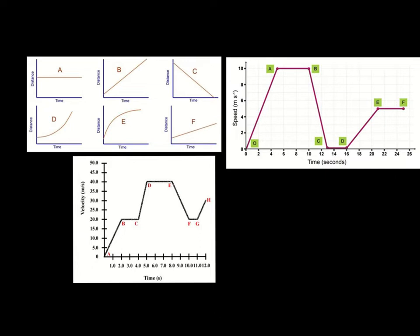Now we've got to check the axes again — this is a speed-time graph, so we treat it differently. On a speed-time graph, as time ticks by — 2 seconds, 4 seconds — their speed is increasing from 0 to 10 metres per second. So from 0 to A, this person is accelerating, because speed is getting faster as time goes on.